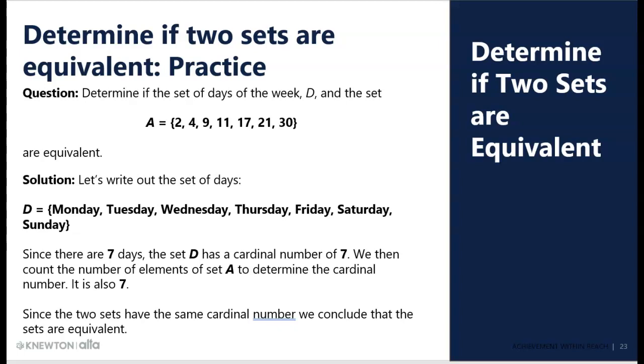...one, two, three, four, five, six, seven, there are seven elements in set D. Let's count the elements in set A: one, two, three, four, five, six, seven. Both sets A and D have seven elements, therefore they are equivalent. Notice I'm not saying equal. Equal is a little stronger relationship. So you just literally count the number of elements in the set to determine if they're equivalent.